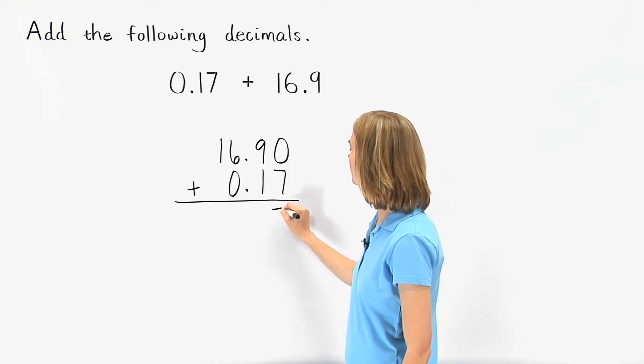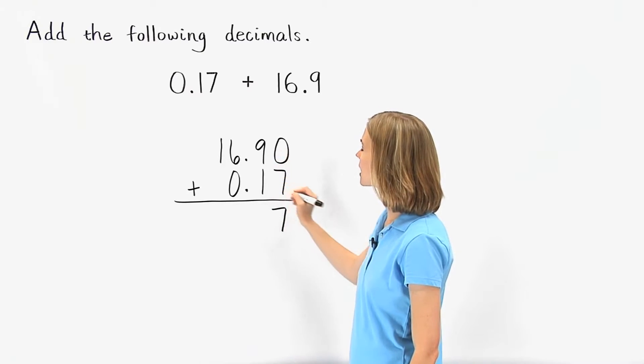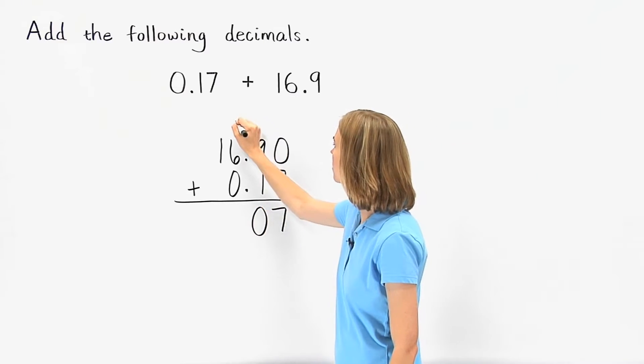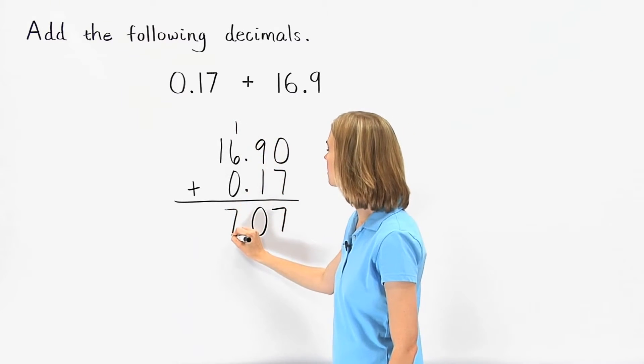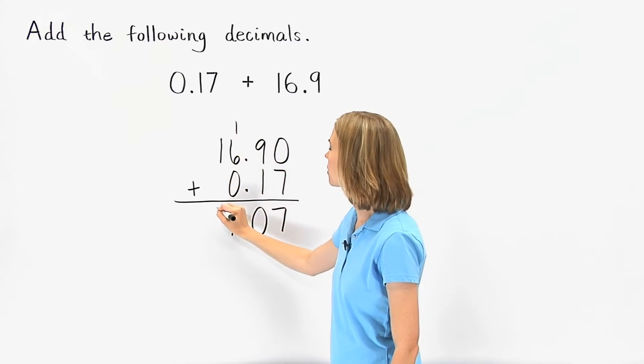Zero plus seven is seven. Nine plus one is ten, so we bring down the zero and carry the one. One plus six plus zero is seven, and one plus zero is one.